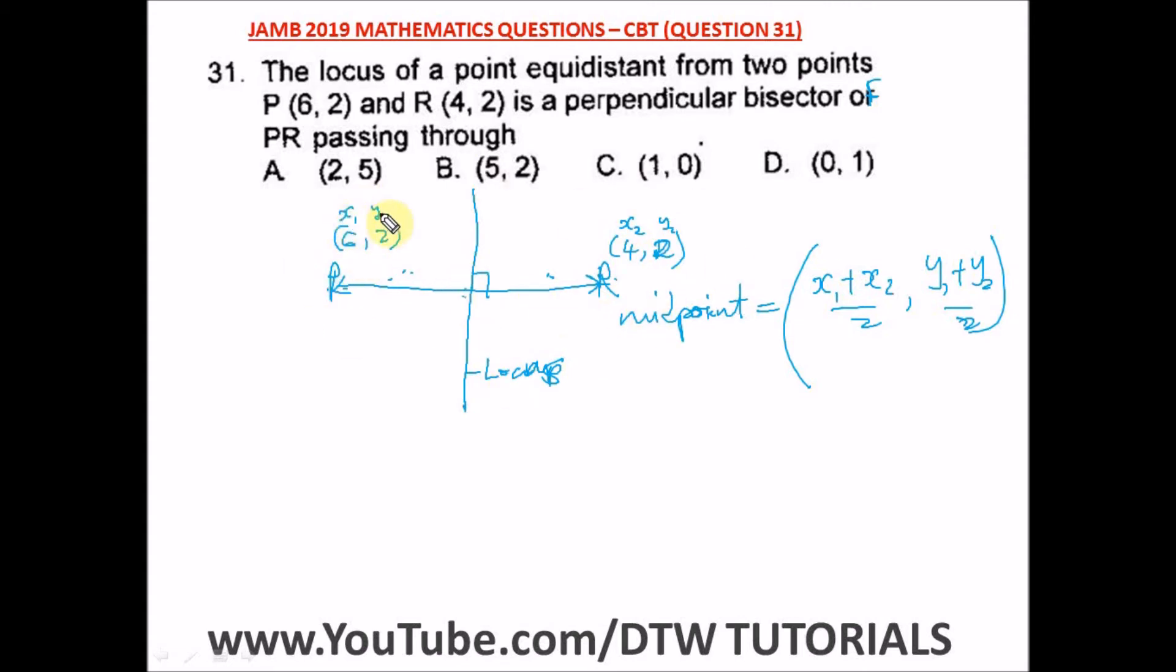You can notice that whenever I have this particular question with points, I always like writing my x1, y1 and x2, y2 on top. Why? So that you don't mix it up. If you don't write it like this, because of examination rush and tension, you might mix up your y1, x2 and all that. So it's always good you write it on top of it.